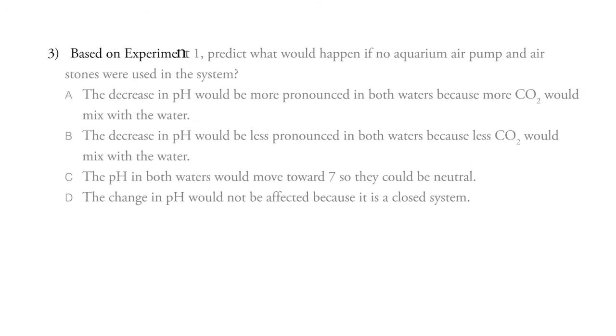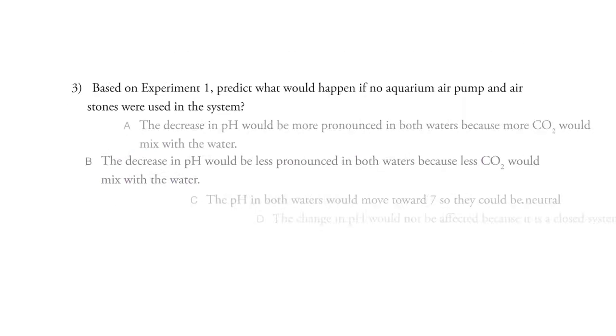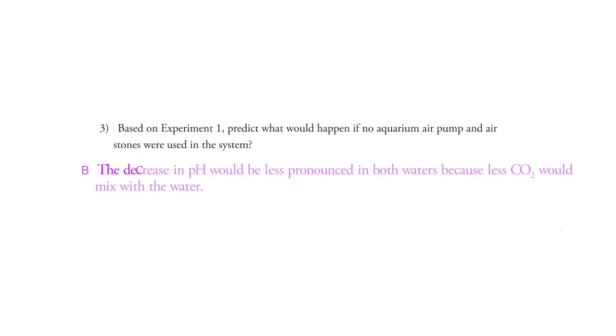Number 3, based on experiment 1, predict what would happen if no aquarium air pump and air stones were used in the system. And this is our answer here. The decrease in pH would be less pronounced in both waters because less CO2 would mix with the water.